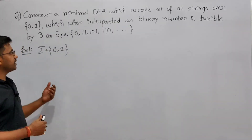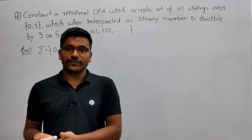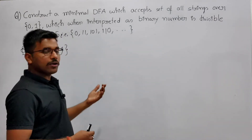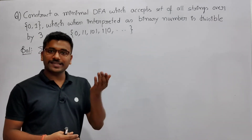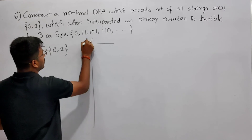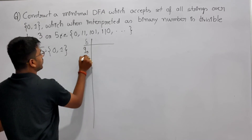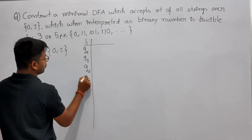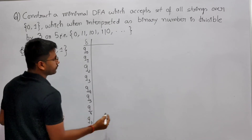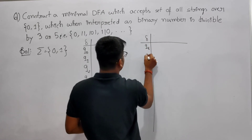We will construct a minimal DFA which is divisible by 15. Since we are dividing by 15, it will require 15 states. So the states will be Q0, Q1, Q2, Q3, Q4, Q5, Q6, Q7, Q8, Q9, Q10, Q11, Q12, Q13, Q14.